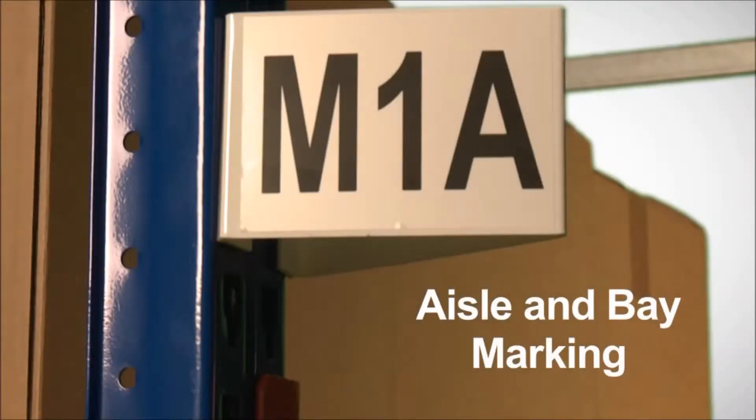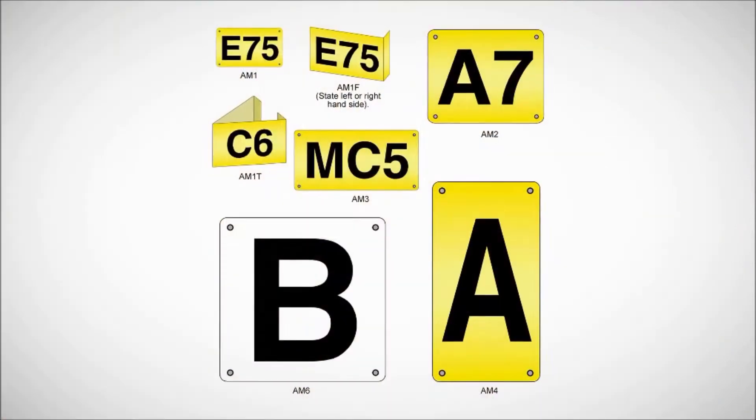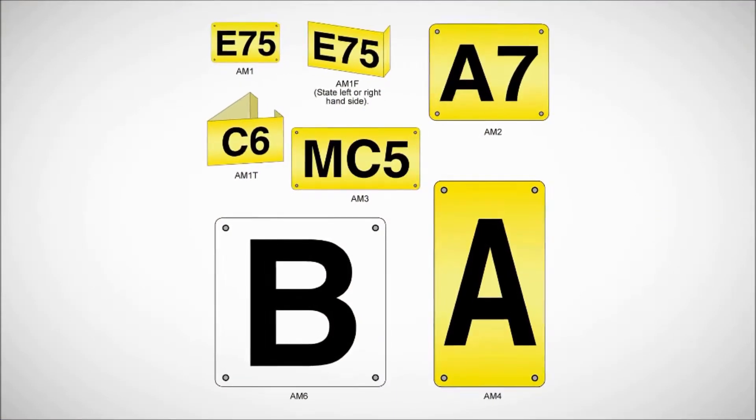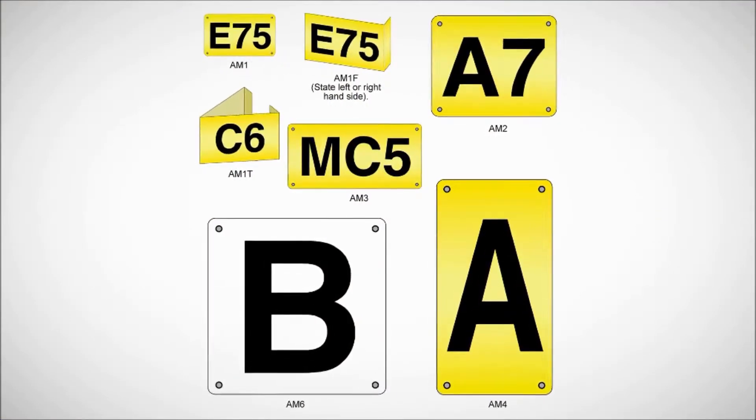Our ranges of highly visible aisle signs identify individual aisles enabling quick and accurate picking and stock placement. They come in a range of shapes and sizes with a white or yellow background color and bold black digits.